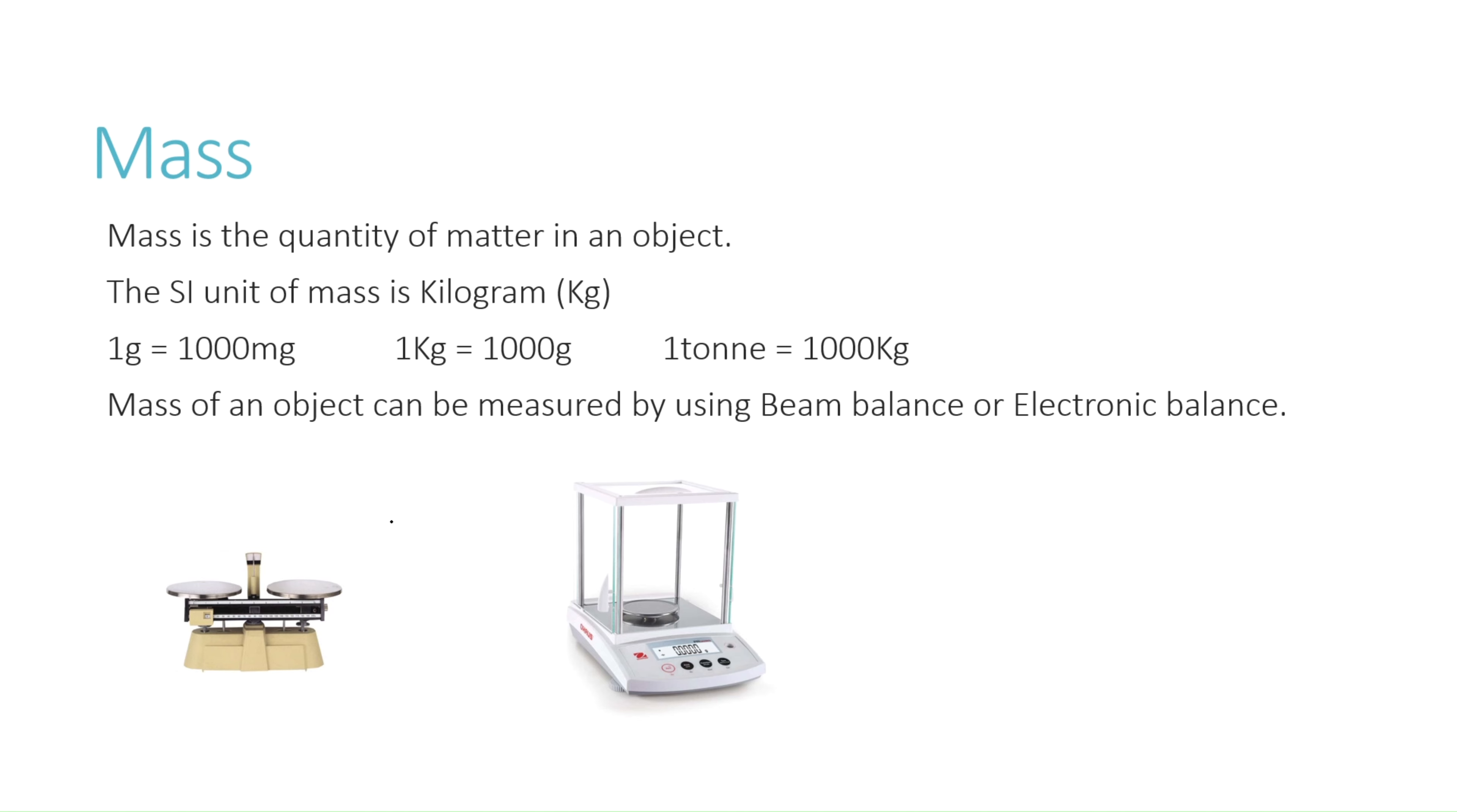Mass of an object can be measured by using beam balance or electronic balance. An electronic balance is accurate and more precise and it's also easy to handle. You can see that 1 gram is equal to 1000 milligrams, 1 kilogram is equal to 1000 grams, and 1 ton is equal to 1000 kilograms.